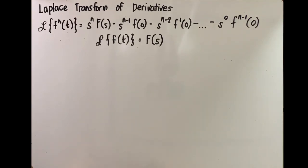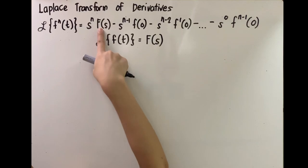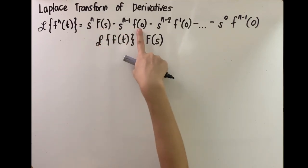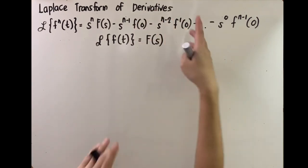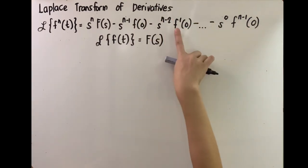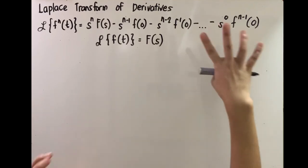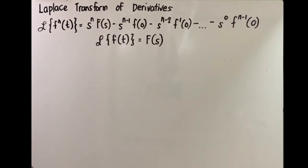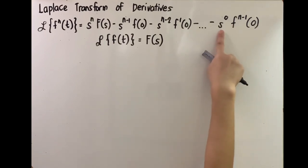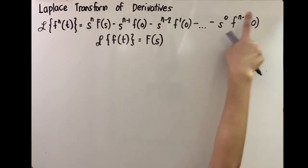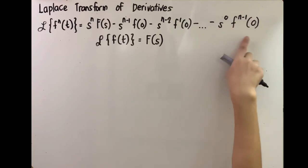The sequence for the functions is: we start with the Laplace transform of the original function F of s, then f of 0 — the value of the original function with the independent variable equal to 0. After this, it is followed by the derivatives in increasing order: f prime of 0, f double prime of 0, f triple prime of 0, and so on.